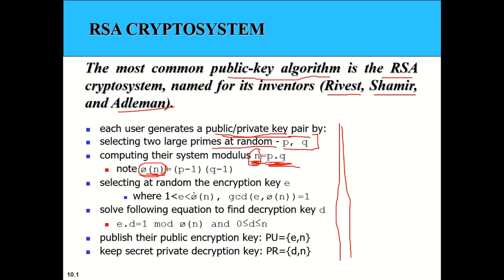Then we select a random encryption key E, where E must be between 1 and phi(N) — greater than 1 and less than phi(N). It must also satisfy the condition that E and phi(N) are co-primes, meaning their GCD must equal 1.